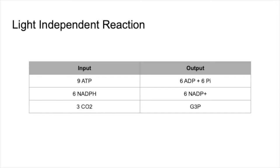The input of light independent reaction are 9 ATP, 6 NADPH, and 3 carbon dioxide molecules. And the output of light independent reaction are 6 ADP plus 6 Pi, 6 NADP+, and G3P.